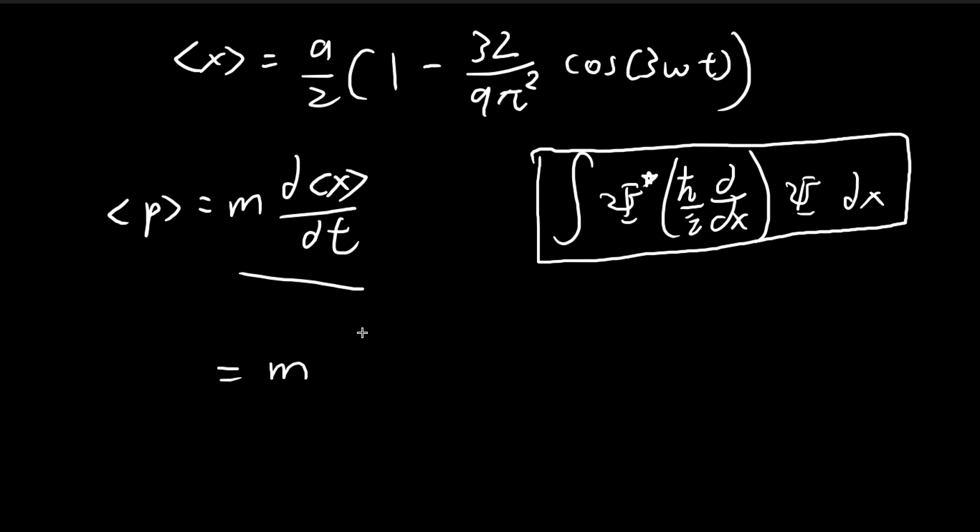So the fast way is to use this definition directly. So taking the derivative of this, we can pull out the a over 2 in the front first. So the 1 just goes away. And then we have these constants. And then for cosine, we use the chain rule.